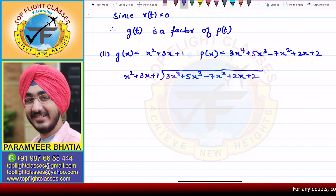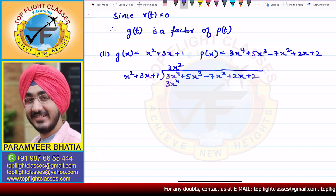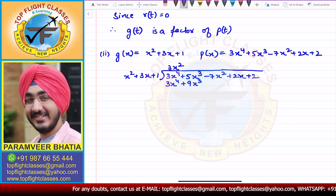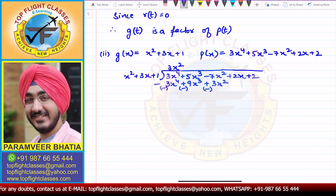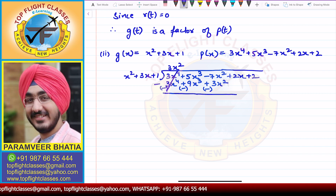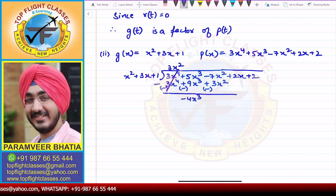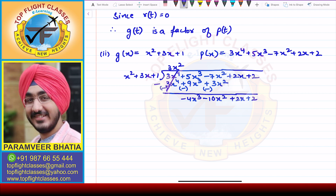To eliminate 3x⁴, I multiply by 3x²: this gives 3x⁴ + 9x³ + 3x². When I subtract, the signs change: 3x⁴ − 3x⁴ cancels, 5x³ − 9x³ = −4x³, and −7x² − 3x² = −10x². Then 2x + 2 come down as is, giving: −4x³ − 10x² + 2x + 2.